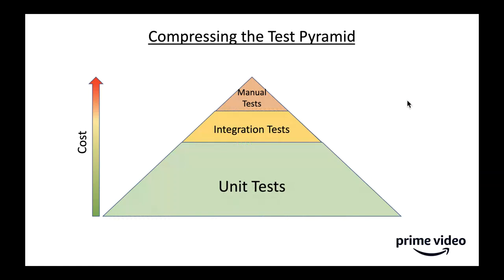Tests are valuable but quite expensive. The test pyramid shows you should invest heavily in unit tests because they're cheap, then integration tests which are a bit more brittle, and at the top are manual tests — really expensive, requiring a person to click buttons, which can slow releases. We try to avoid those at all costs. With static analysis, we wanted to compress the test pyramid and complement traditional testing, automatically catching issues before they hit production.